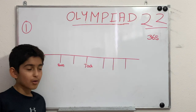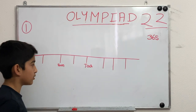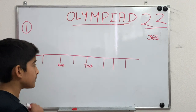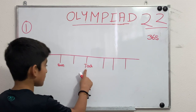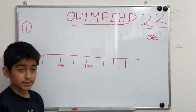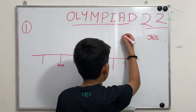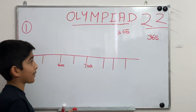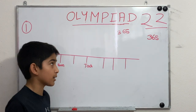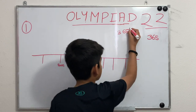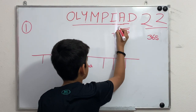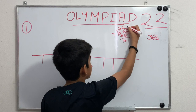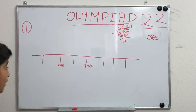So two days ago was Sunday, and we're supposed to find what day it is 365 days from today. There are seven days in a week, so we're going to divide 365 by 7 to find how many times it repeats. We don't care about how many times it repeats — we care about the remainder. 365 divided by 7 gives 52 with a remainder of 1.